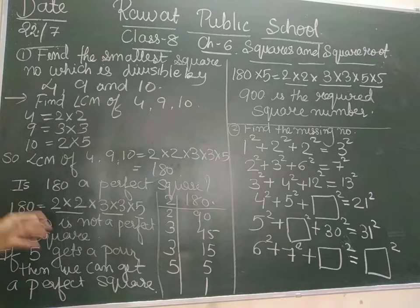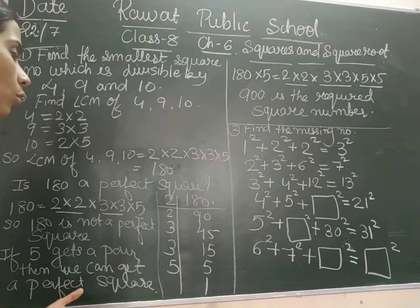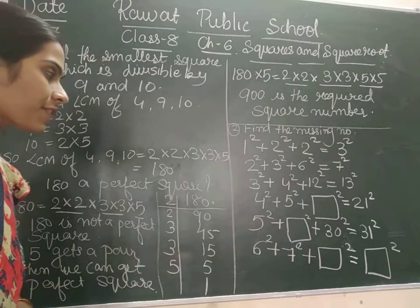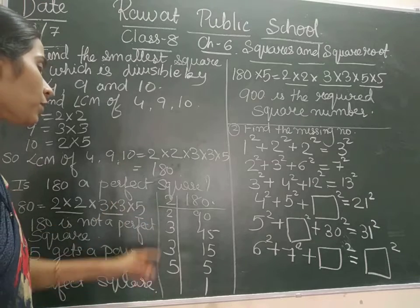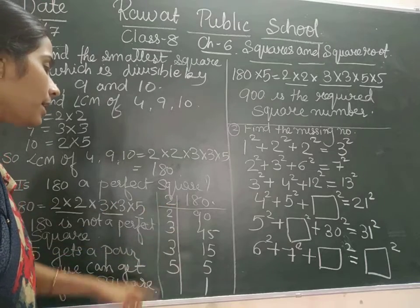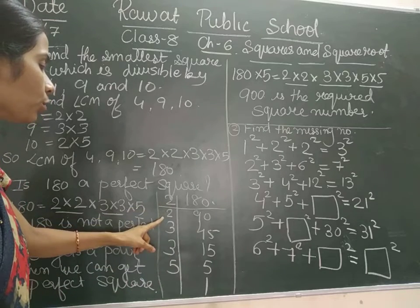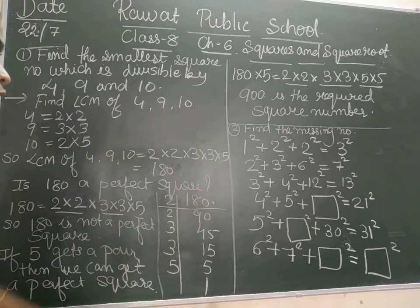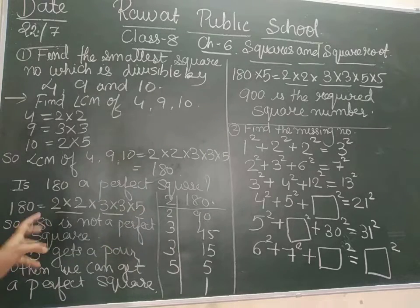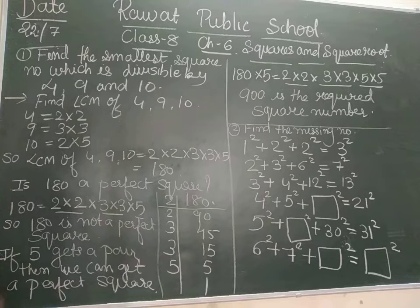Now what do you think — is 180 a perfect square or not? So first, take out the prime factors of 180. We will get 2 into 2 into 3 into 3 into 5. So in the factors of 180, 2 is having a pair, 3 is also having a pair, but 5 is alone — it is not having a pair. So if any of the factors are not having a pair, then that number is not a perfect square.